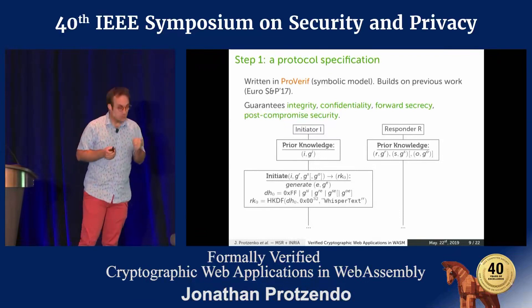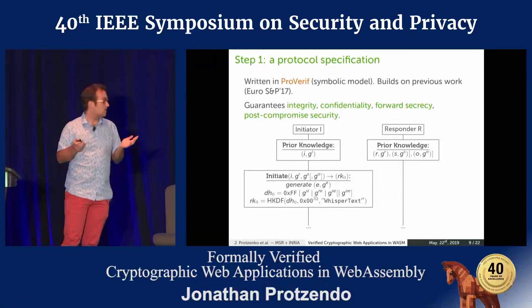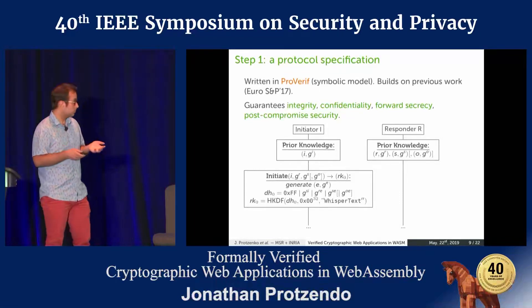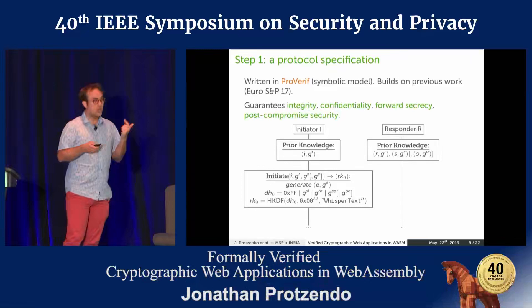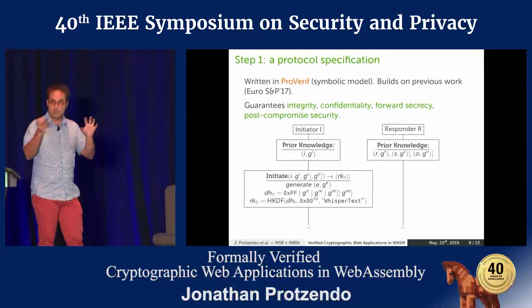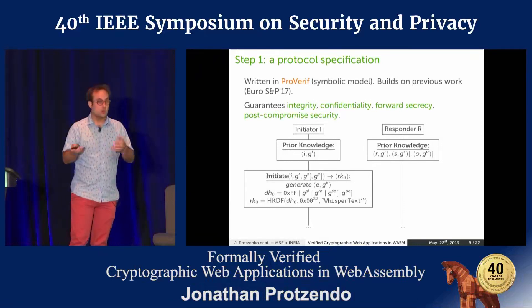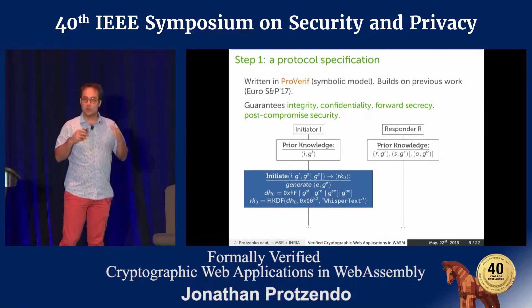There are four big steps. The first one is specifying the protocol. We build on previous work published at USENIX S&P '17, and we write a complete model of Signal using the ProVerif symbolic verification tool. This tool says your protocol looks fine — it can check that the protocol has integrity, confidentiality, forward secrecy, and post-compromised security. These things are described in a diagram with messages and key protocol actions, such as initiate, that precisely describe what Alice and Bob are doing.